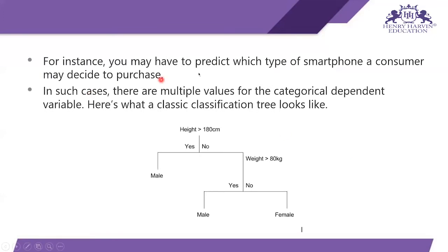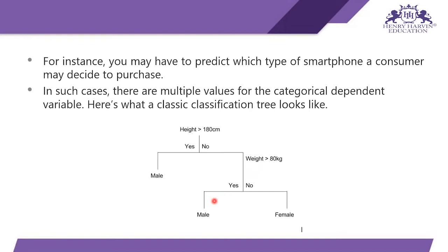In other cases, you may have to predict among a number of different variables — for instance, which type of smartphone a consumer may decide to purchase. In such cases, there are multiple values for the categorical dependent variable. Here is what a classic classification tree looks like: it determines if a person is male or female. If height is greater than 180 cm, the person is classified as male. If not, then based on weight — if weight is greater than 80 kg, the person is male.